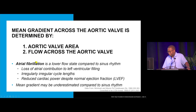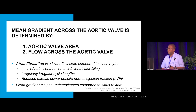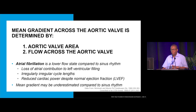Atrial fibrillation is a lower-flow state compared to sinus rhythm, for several reasons: loss of atrial kick — reduced atrial contribution to left ventricular filling — irregularly irregular cycle lengths, and reduced cardiac power. Forward flow in a patient with atrial fibrillation is much lower than in a patient in sinus rhythm for the same ejection fraction.